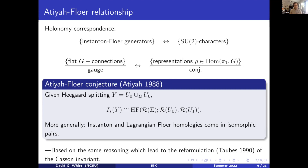Now, this conjecture as stated isn't perfectly rigorous because, in general, the SU2 character variety of a surface — a genus g surface Σ — is not actually a smooth symplectic manifold. But there are some tricks that one can do to make it so, and I'll be using one such trick in my construction here.